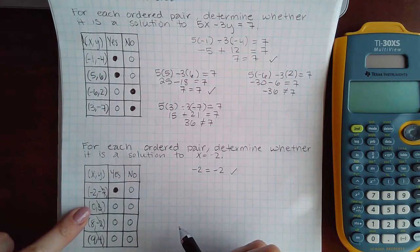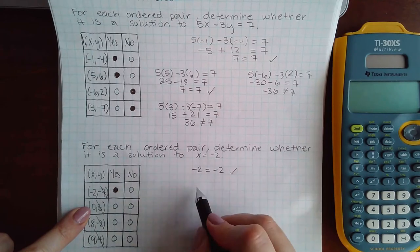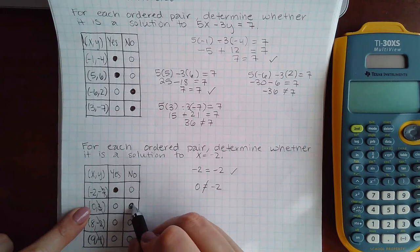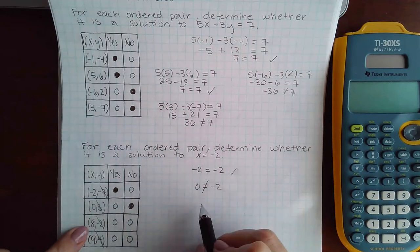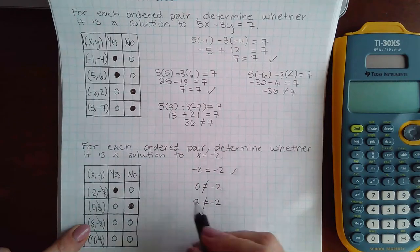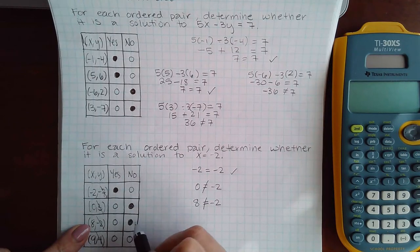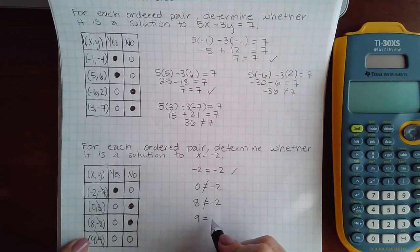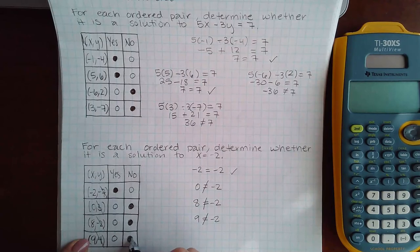Now we move on to x equaling 0. So this becomes 0, but this is not equivalent. So the answer is no. Here we're going to plug in 8 for x. But again, that is not equivalent. So we say no. And finally, we're going to plug in 9 for x. But again, that is not equivalent. So the answer is no.